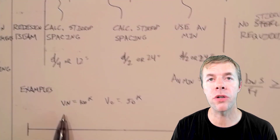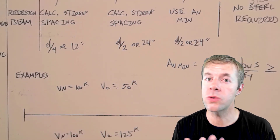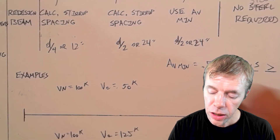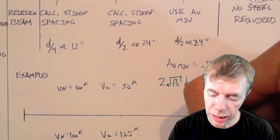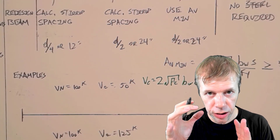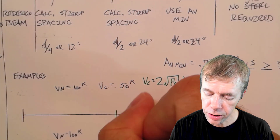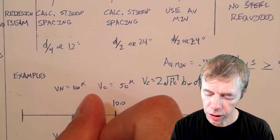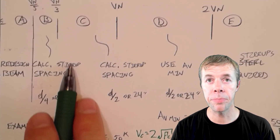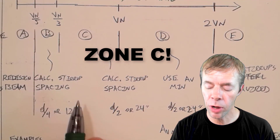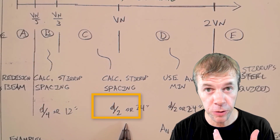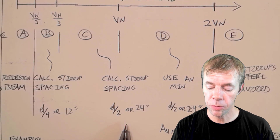Let's say our structural analysis gives us 100 kips of shear to design for. Using our equation, 2 times the square root of f prime C times bw times d, we calculate V sub C equals 50 kips. On the graph, 50 falls between one-third and the full design shear of 100. We go up on the graph and see that we are in Zone C — we need to calculate stirrup spacing and use a minimum spacing of d over 2 or 24 inches.